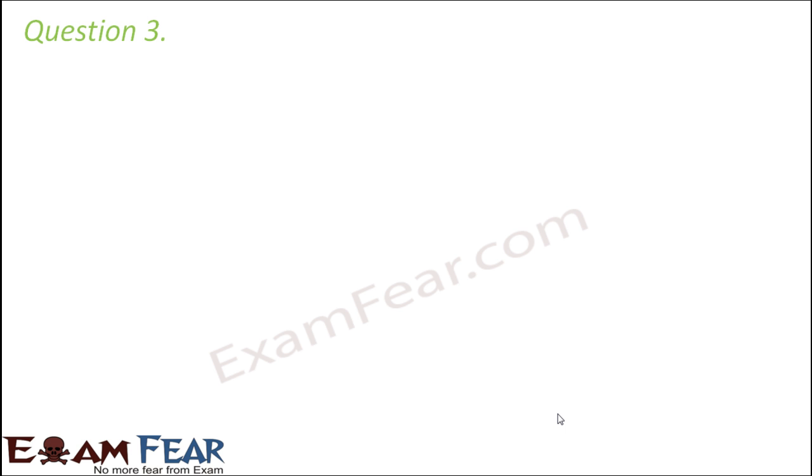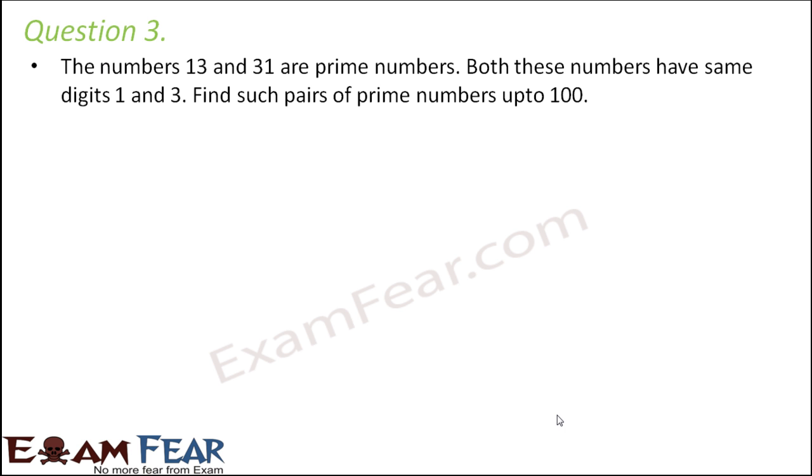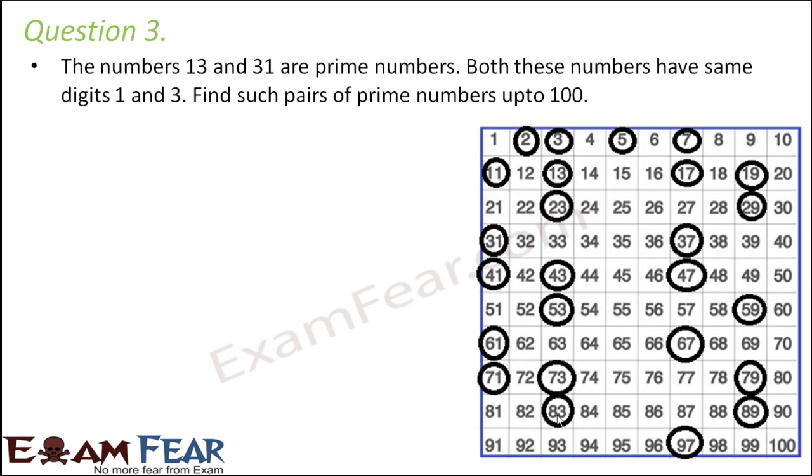Question number three. The numbers 13 and 31 are prime numbers. Both these numbers have same digits 1 and 3. Find such pairs of prime numbers up to 100. So basically what are we trying to do? We are trying to find out numbers which are prime numbers and which are made up of the same digits. So 13 and 31 is already mentioned. Now let's look at the sieve of Eratosthenes. Looking at the sieve we can very distinctly see the encircled numbers which are the prime numbers. So it becomes easier for us to search for such numbers.